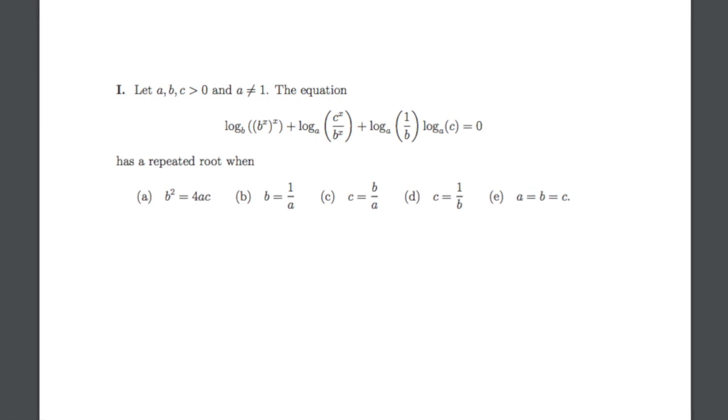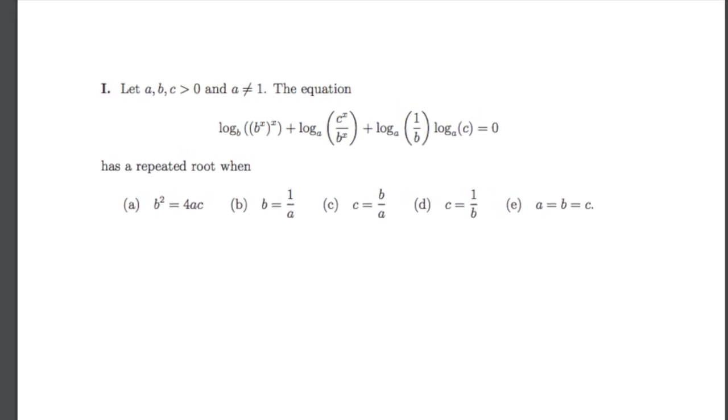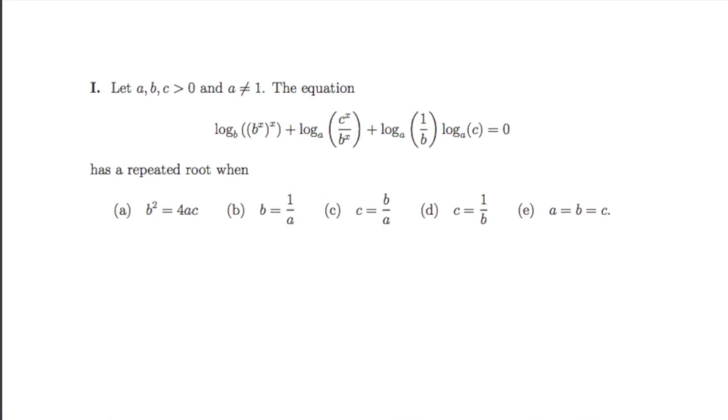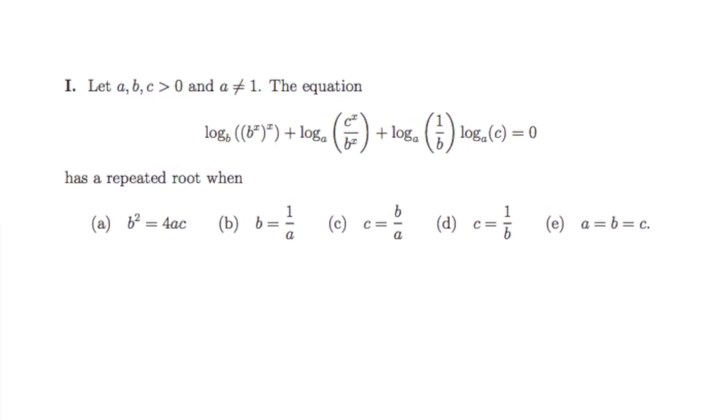We are given that a, b and c are positive constants, and that a does not equal 1. We are shown a very lengthy logarithmic equation, and we need to find out what condition is required for this equation to have a repeated root.